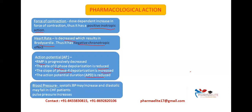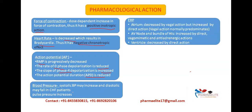Next is blood pressure. Digitalis increases systolic blood pressure and decreases diastolic blood pressure in CHF patients, so pulse pressure increases. Regarding the effective refractory period (ERP): in the atrium, ERP is decreased by vagal action and increased by direct action, but overall vagal action predominates. In the AV node and bundle of His, ERP is increased by direct and vagal/adrenergic action. In the ventricles, ERP is decreased by direct action.